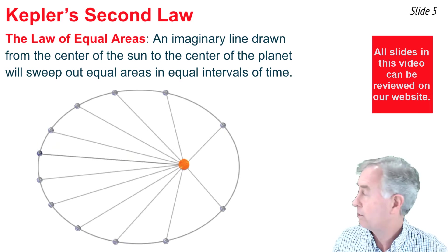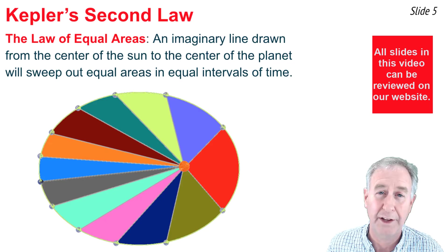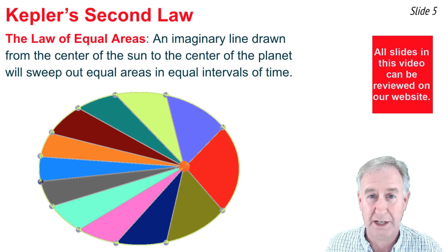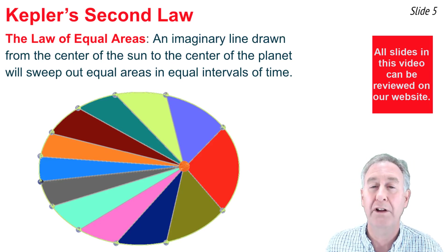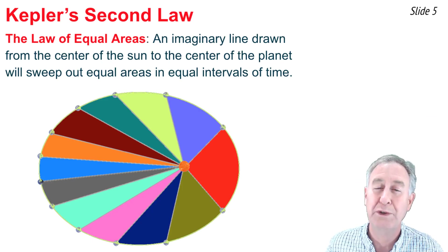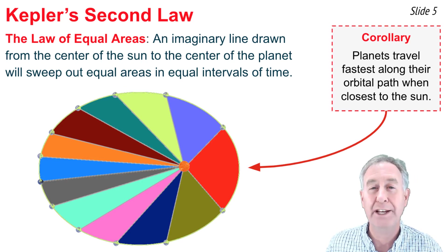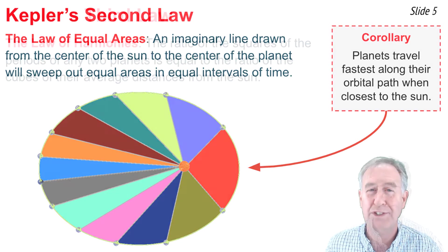Now, here we see the ellipse shaded in in color, and I want you to look at the red area and the blue area. The red area was swept out when the planet was closest to the sun, and in order to sweep out an area there that is equal to the blue area, the planet must travel a longer distance along its orbital path in order to do so. So, one corollary of Kepler's second law is that planets travel faster along their orbital paths when they're closest to the sun.